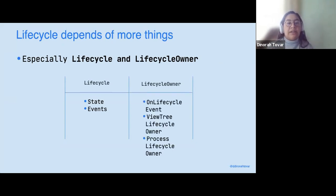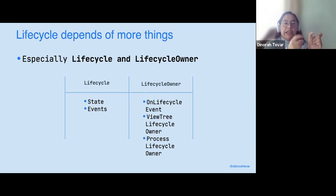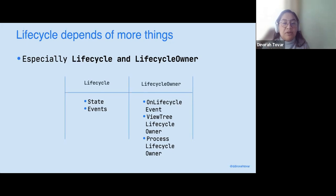Lifecycle is in charge of the states and events that are thrown around the lifecycle. And your LifecycleOwner makes sure that every stage and every event is reported to the process — to the owner of the lifecycle owner. The lifecycle owner is your fragment, your activity, your class, your general application. And the lifecycle is in charge of giving you the full picture of where that activity is.